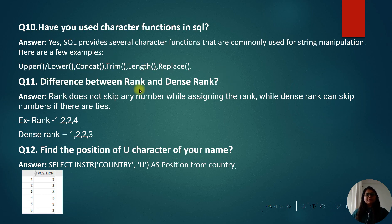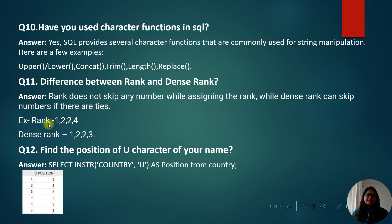Next question: difference between RANK and DENSE_RANK. RANK can skip numbers when assigning ranks if there are ties, while DENSE_RANK does not skip numbers. For example, RANK may produce 1, 2, 2, 4 — skipping 3 — whereas DENSE_RANK produces 1, 2, 2, 3. You can also mention this example in the interview.